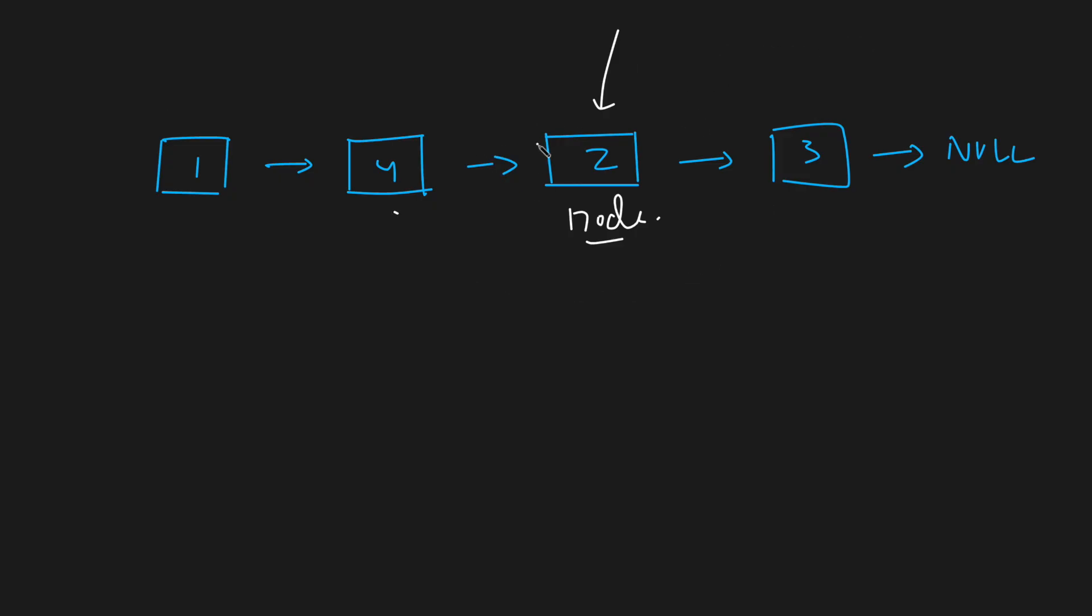Now the question might look interesting but trust me it has a dumb solution. The solution is very simple - what you do is you simply copy this three over here, and after this you cut this pointer and point it to the next of next of three, so that's going to point to null.